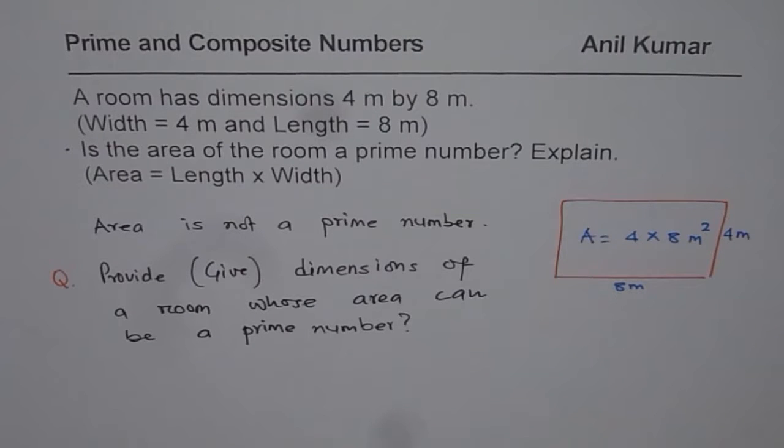Now you think about what could be the length of a room and what could be the width of the room so that the area is a prime number. That is a good question for you. Think about it, pause the video and I will provide you with the answer in just a second.